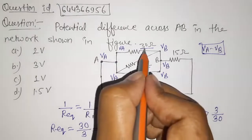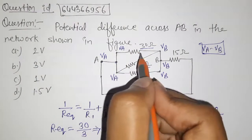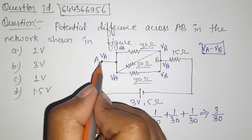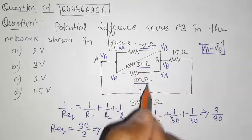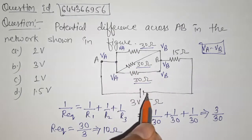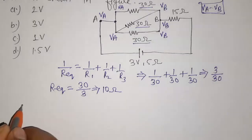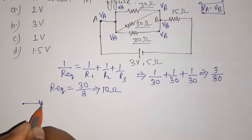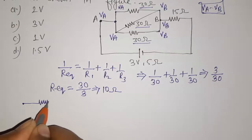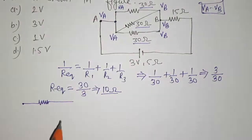The equivalent resistance of this parallel combination is 10 ohms. To find the potential difference between A and B, we need to find the current through the circuit. Let us draw a simpler circuit where the equivalent resistance between A and B is 10 ohms.